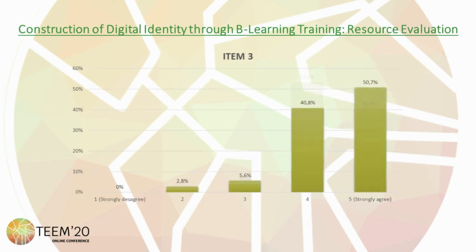In the third item, 50.7% of the students strongly agree with the adequacy of spaces and means of communication. 40.8% report agreeing, while 2.8% state they disagree regarding their adequacy.